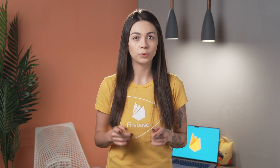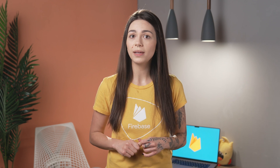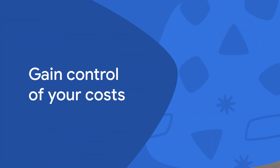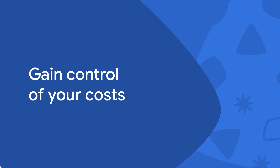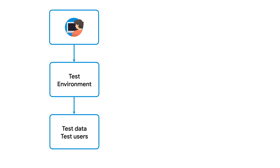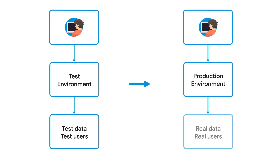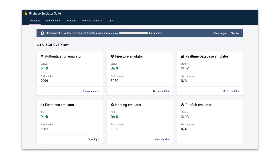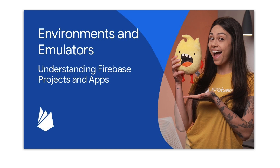If you decide to keep your upgraded pricing plan, let's take a look at the tools Firebase offers so you can have more control of your costs. There are some steps you can take, like testing your code correctly, constantly monitoring the usage of paid products, and setting up email alerts. Testing your code is a very important part of the development process, and we highly recommend testing in a testing environment before shipping to production. When using a different environment, you can use the Firebase Emulator Suite to test your application. It ensures that you don't incur any Firebase costs that might result from testing against services in production.